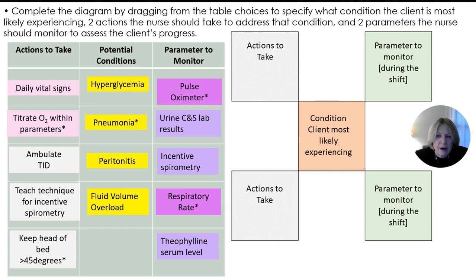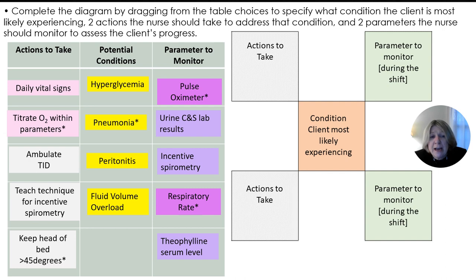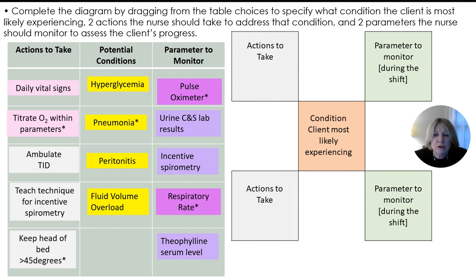The correct answers are marked with asterisks. Pneumonia is confirmed as the condition — mucus sitting in the lung fields, not expectorated, clogs the alveoli, and given enough time bacteria can cause infection. We titrate oxygen within parameters — I'd go up to two liters, monitoring with the pulse oximeter, and monitor the respiratory rate. And the first action to optimize the patient's lungs is the non-invasive action of keeping the head of bed greater than 45 degrees.